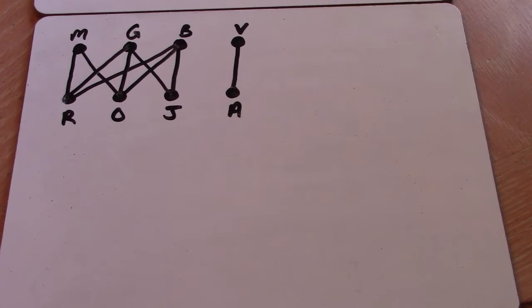Across the top you see the four letters there, M, G, B, and V, which represent the female characters in that storyline. And across the bottom, R, O, J, and A, which represent the male characters in the Archie Comics.